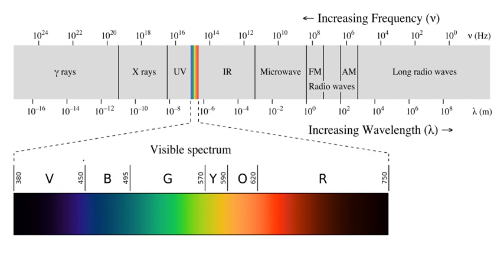Sound waves are not electromagnetic radiation. At the lower end of the electromagnetic spectrum, about 20 Hz to about 20 kHz, are frequencies that might be considered in the audio range. However, electromagnetic waves cannot be directly perceived by human ears. Sound waves are instead the oscillating compression of molecules. To be heard, electromagnetic radiation must be converted to pressure waves of the fluid in which the ear is located.